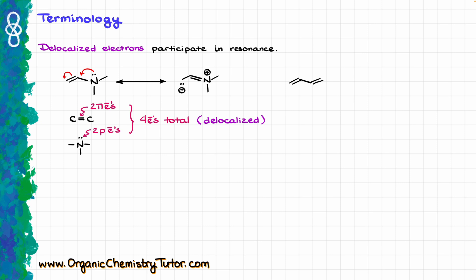Here is another example: butadiene. In this case, like in the previous example, I can do resonance by taking one of my double bonds and polarizing it towards the other double bond. If I take these electrons and push them towards my other double bond, I end up with the following resonance structure. The electrons that participated in resonance are those of the double bonds, so here again I have four total delocalized electrons.